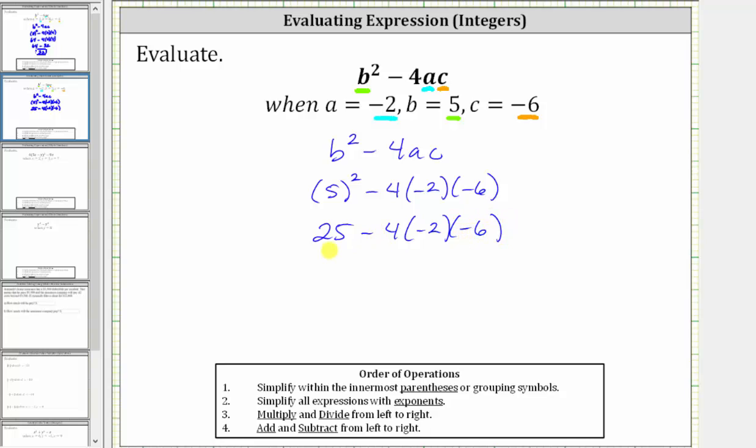The next step is to multiply. Four times negative two times negative six is equal to positive 48, giving us 25 minus 48.